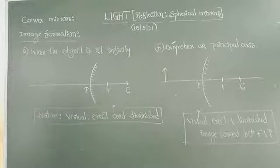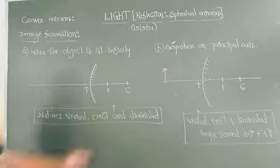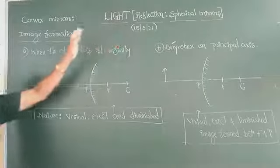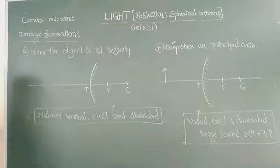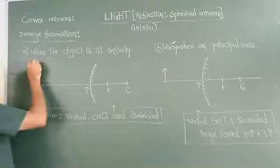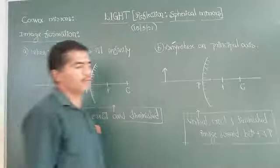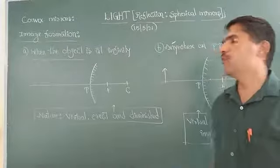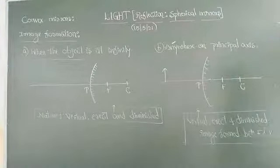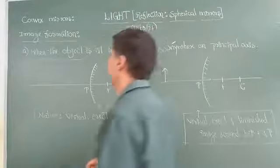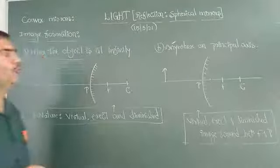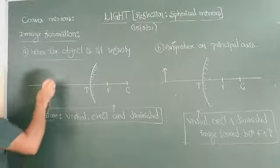Good morning channel. In today's class we are discussing about position of images formed in a concave mirror, a convex mirror, where the object is at infinity as well as the object anywhere on the principal axis. Why do we discuss only two positions here? Before understanding that, first of all, let us read the definition of focus of a convex mirror.